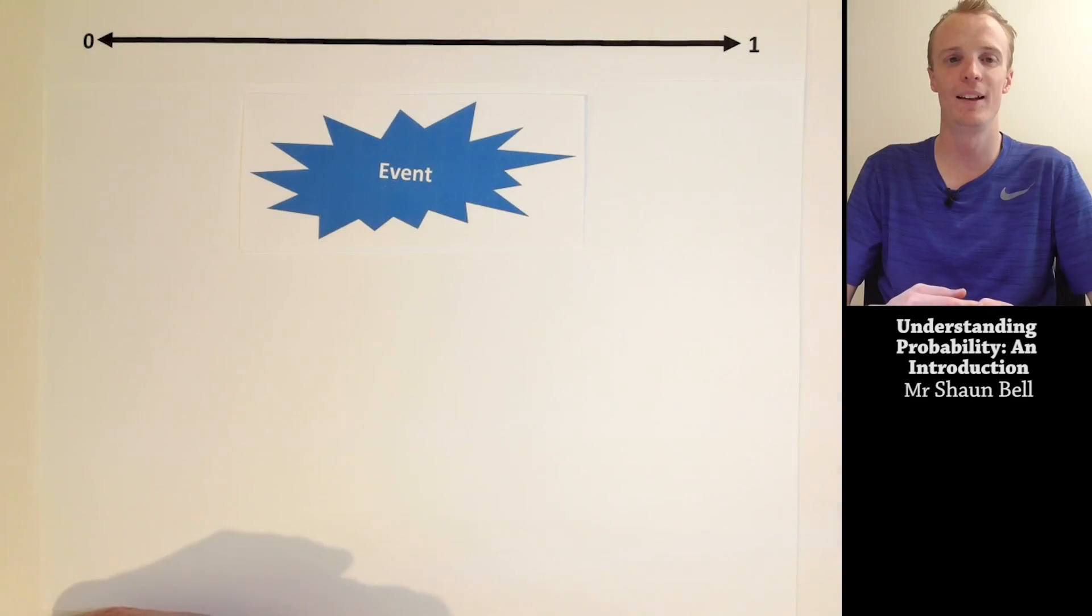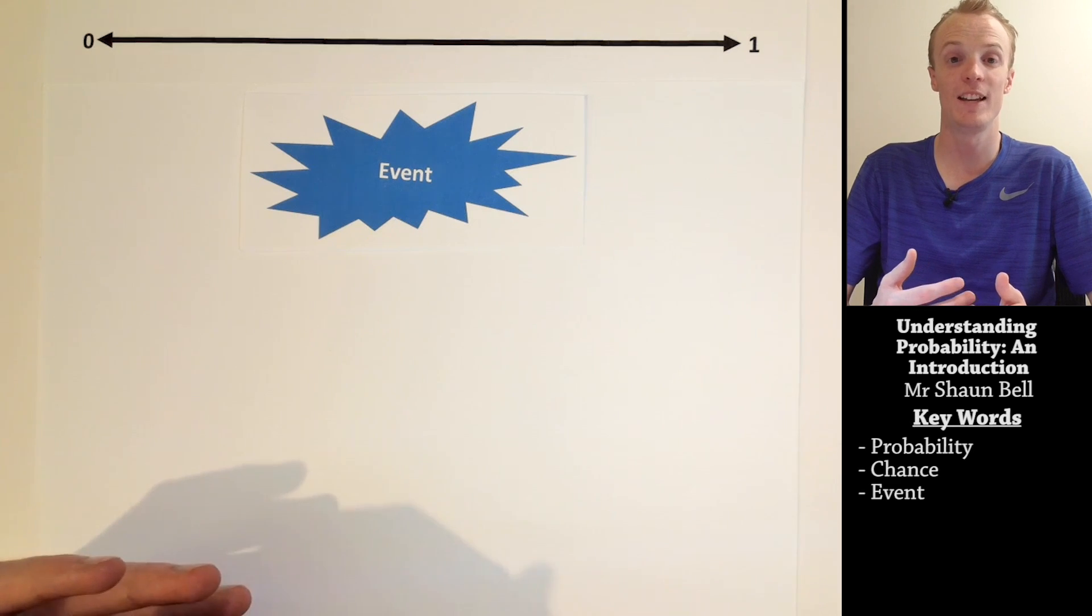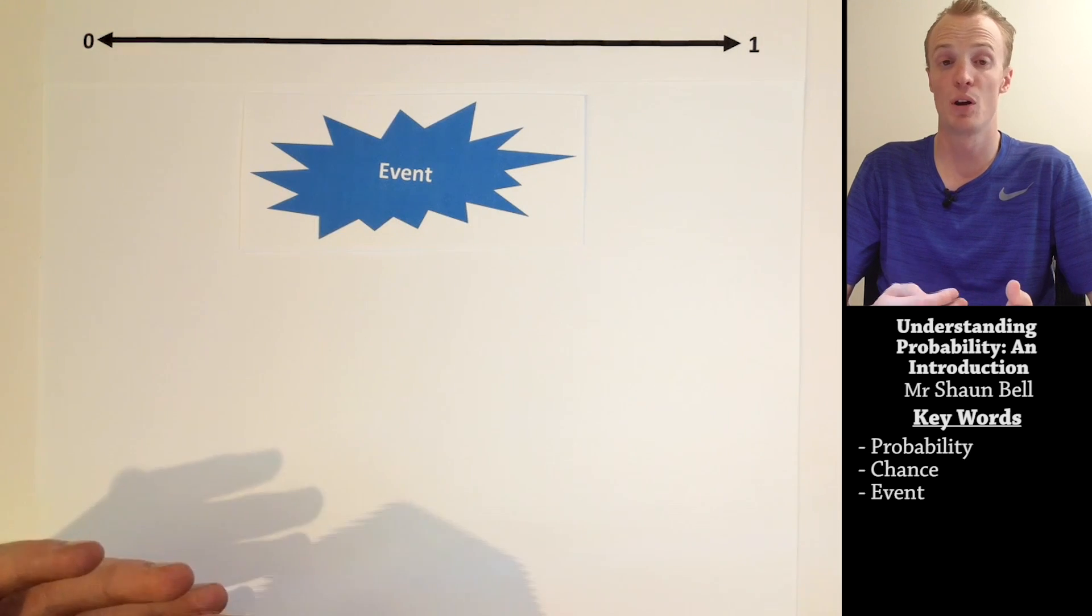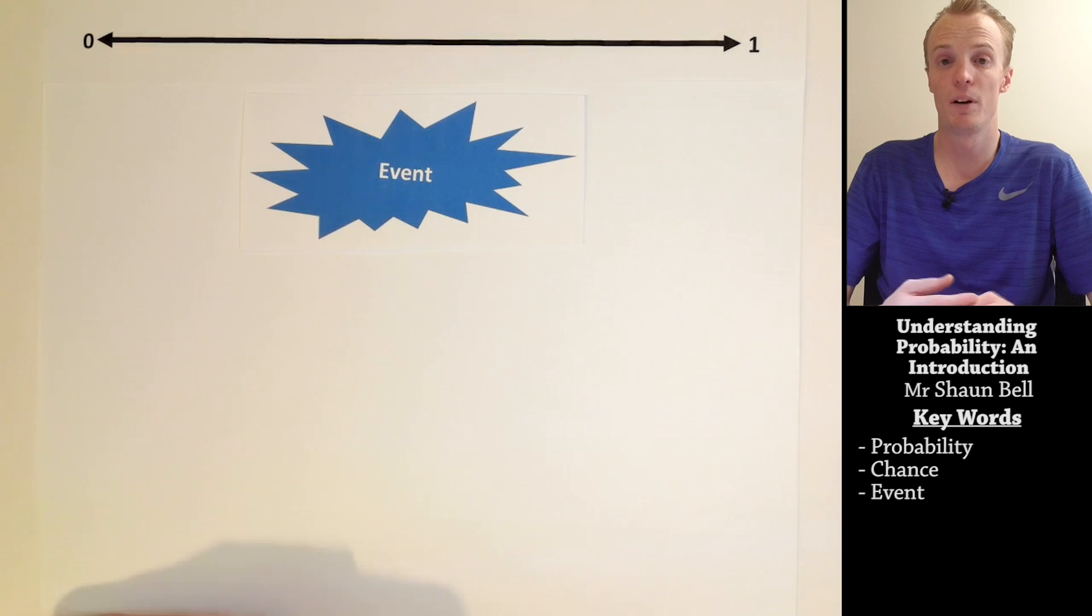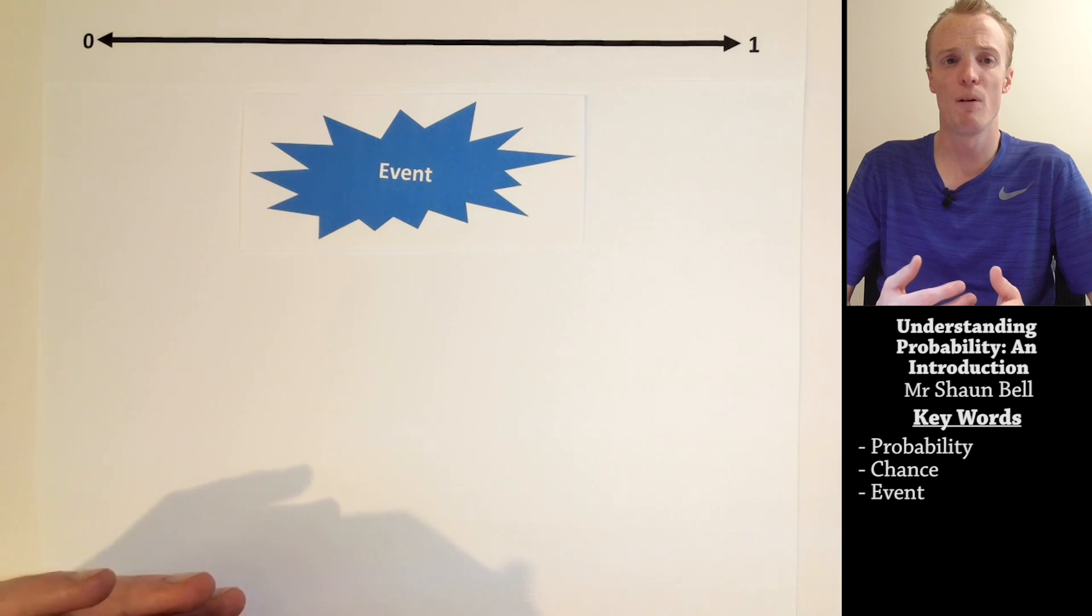When we discuss probability, there are many different terms that we use, the first of which is an event. An event in probability is simply something that occurs. Examples of events are tossing a head when we flip a coin, rolling a four on a die, or having a day when it rains.